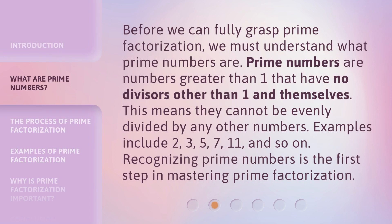Before we can fully grasp prime factorization, we must understand what prime numbers are. Prime numbers are numbers greater than one that have no divisors other than one and themselves. This means they cannot be evenly divided by any other numbers. Examples include 2, 3, 5, 7, 11, and so on. Recognizing prime numbers is the first step in mastering prime factorization.